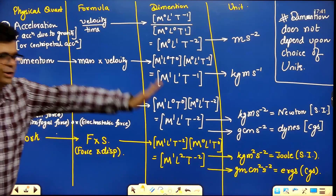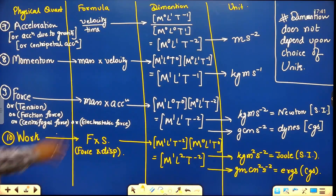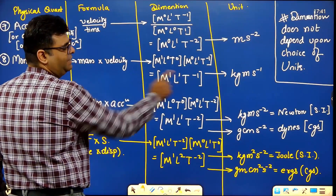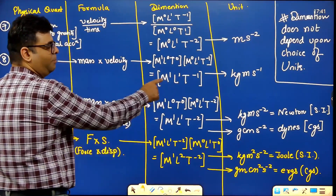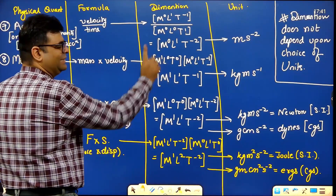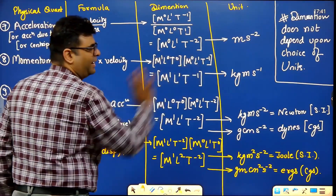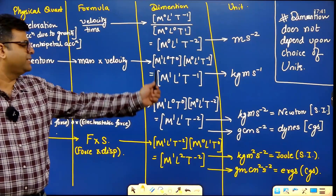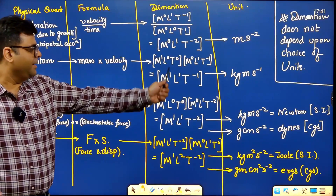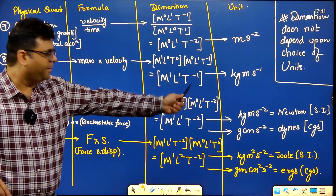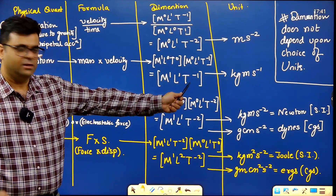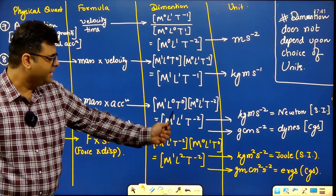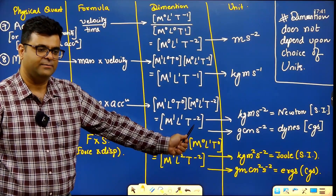From the dimension you can also find the unit. For momentum (M¹L¹T⁻¹): SI units are kilogram·meter per second. For force (M¹L¹T⁻²): SI units are kilogram·meter per second squared.